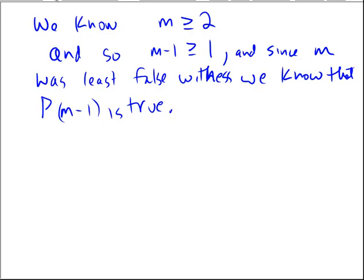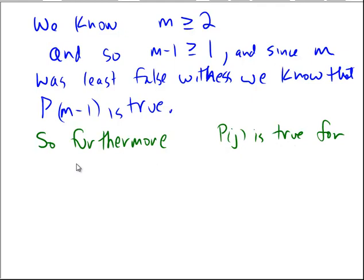So, it's wonderful that P(m-1) is true, but we actually know something more. M was the least false witness. So, furthermore, we actually know that P(j) is true for all j that happened to be located between 1 and all the way up until M minus 1. Not only M minus 1, but all of the preceding natural numbers before M minus 1 all the way down to 1.